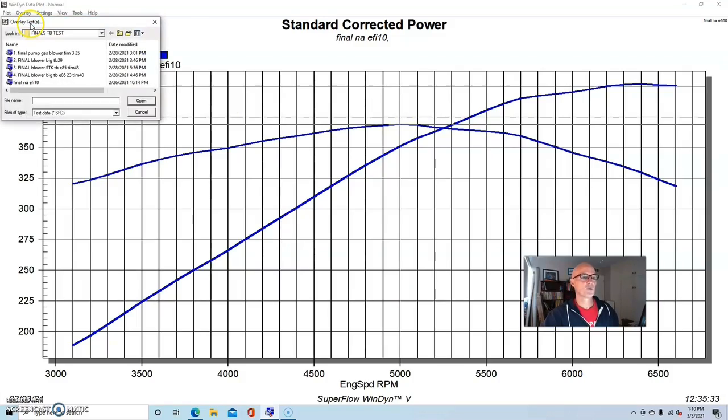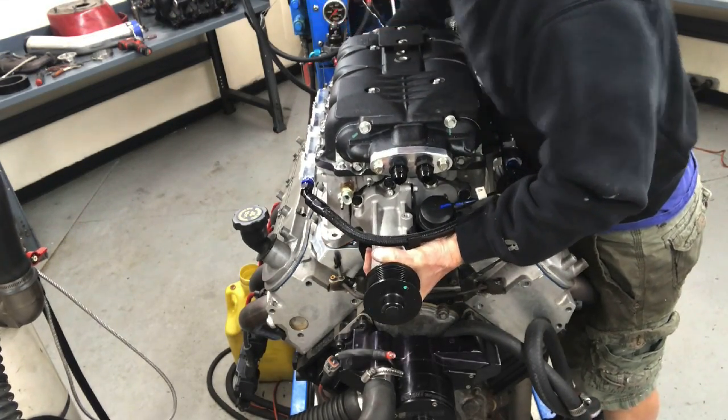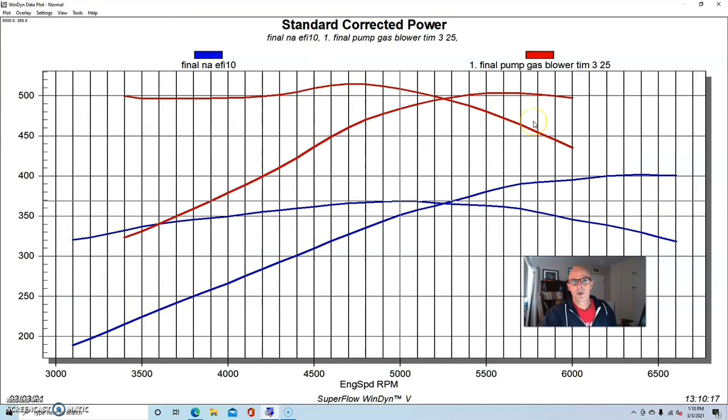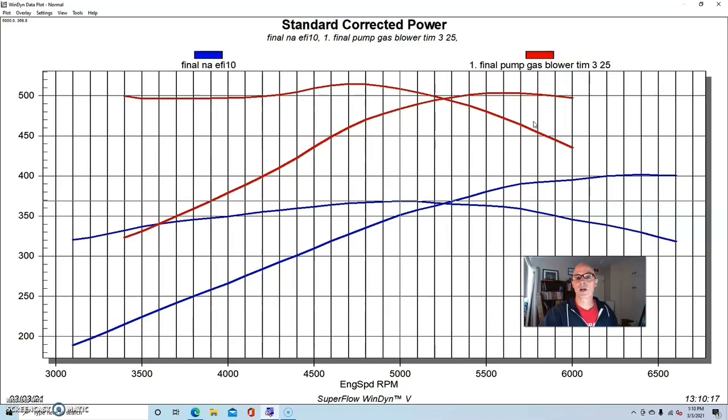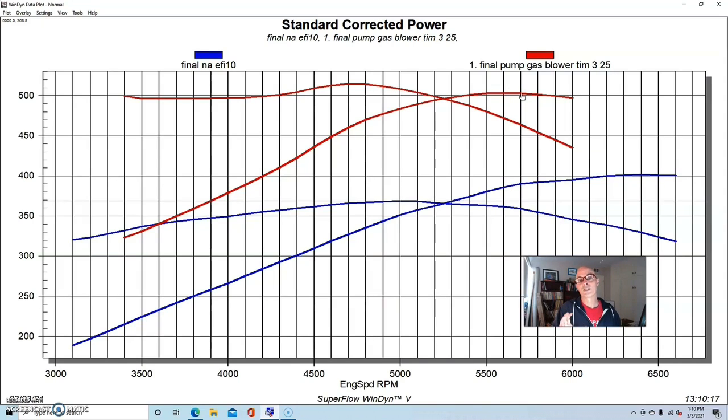And here's what happened when we installed the Cadillac supercharger running about 11 pounds of boost. This was with the stock throttle body, with the truck throttle body, the manual one. And we ran it with an inlet tube, a three and a half inch inlet tube, running into the back of the blower.